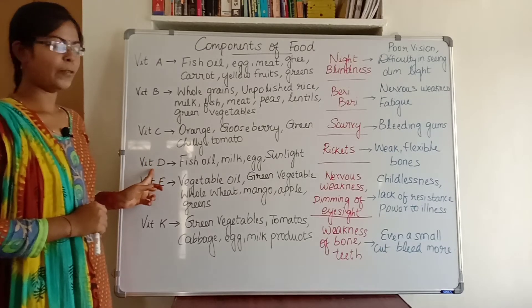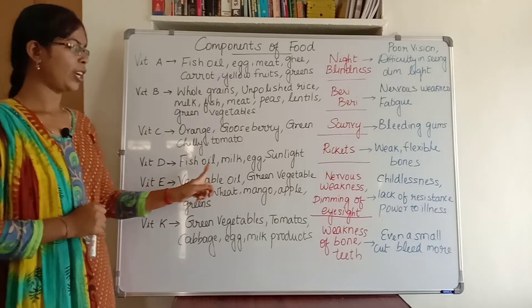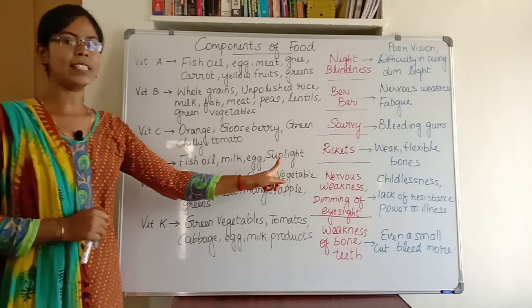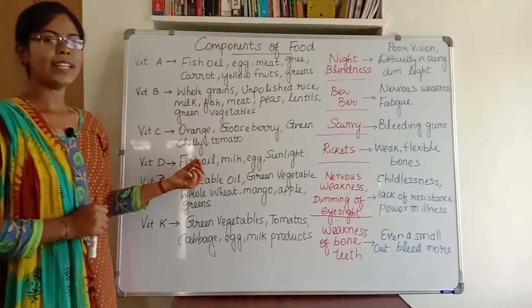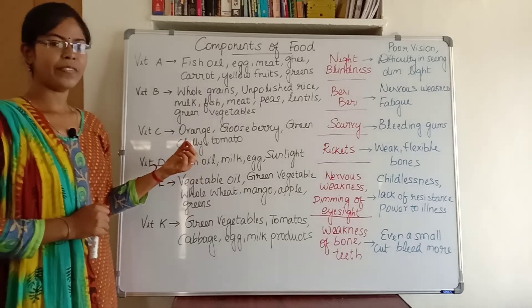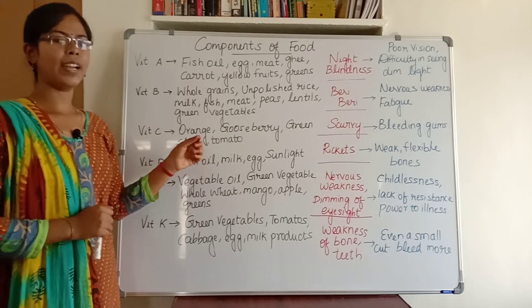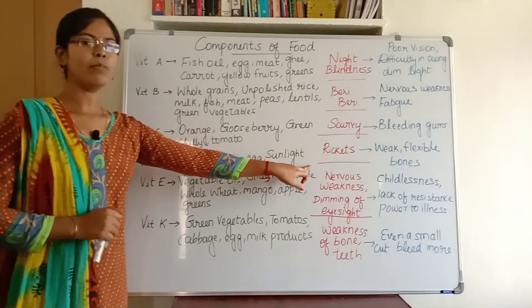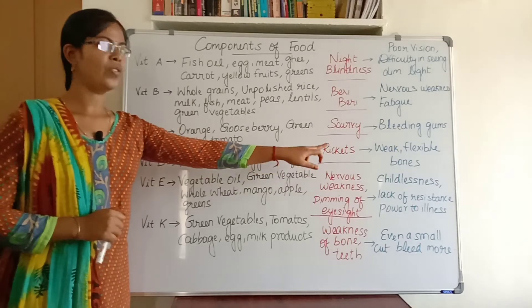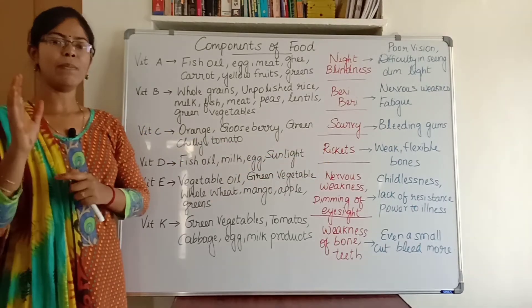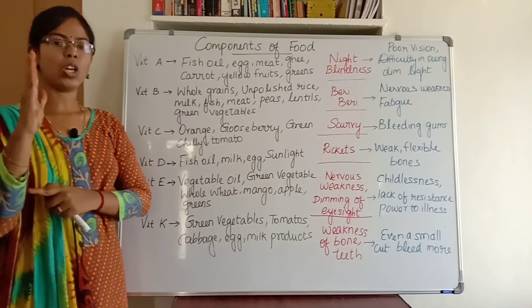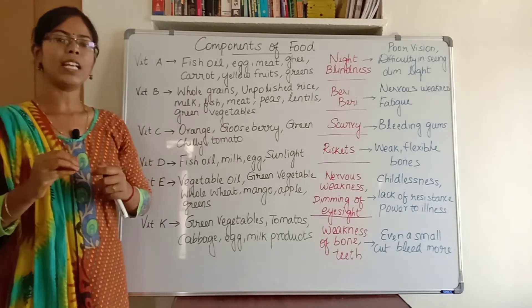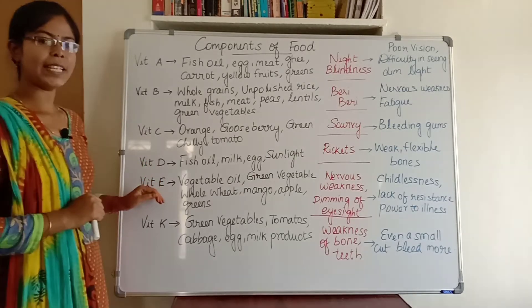Vitamin D can be seen in foods like fish oil, milk, and egg, and it is also present in sunlight. If our body is deficient in vitamin D, we will get a disease called rickets. The symptoms of rickets are weak and flexible bones — flexible means our bones will not stand straight, they will be slanting, and sometimes our bones may even break.